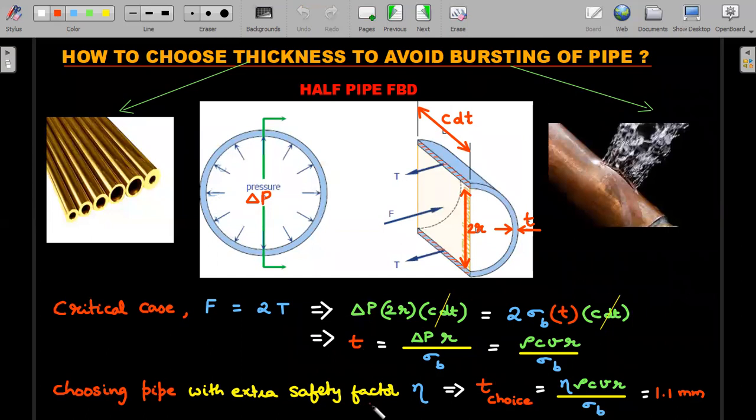In order to provide a safety factor, you obviously take a thicker pipe with a factor of η. In this question he has given us five times. So the t_choice would be five times this t, and that's what η has been multiplied for. With all the numericals given in the question, if you substitute, the thickness of this pipe to ensure that the bursting doesn't happen comes out to be 1.1 millimeter.